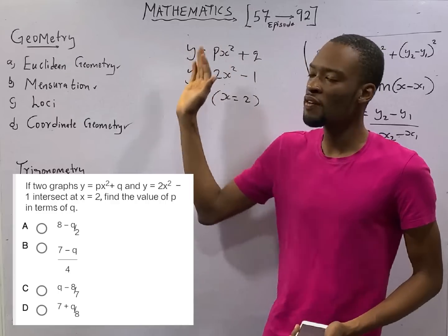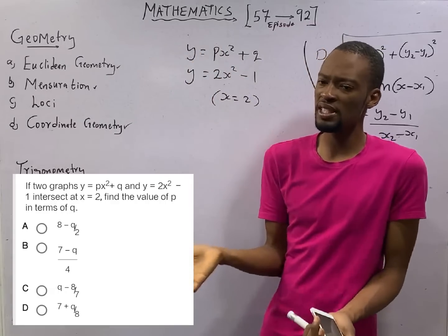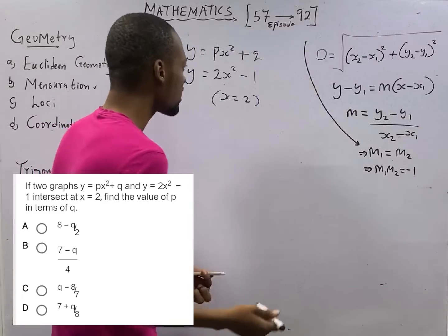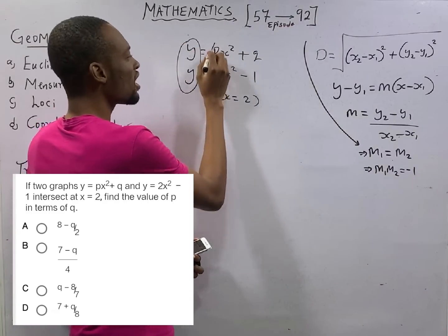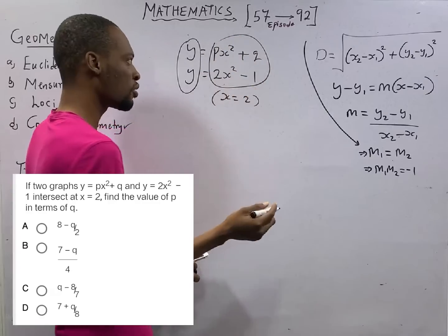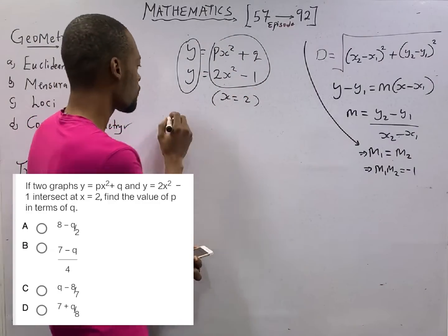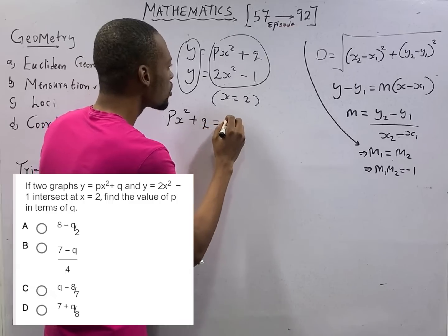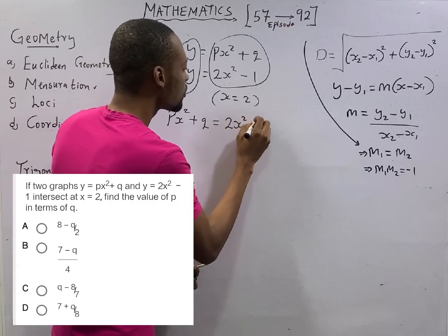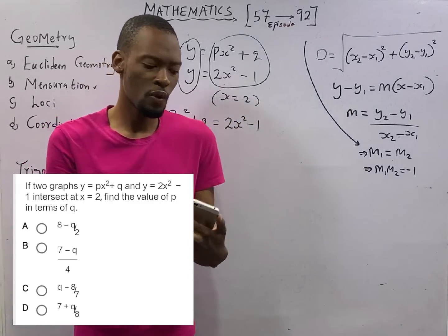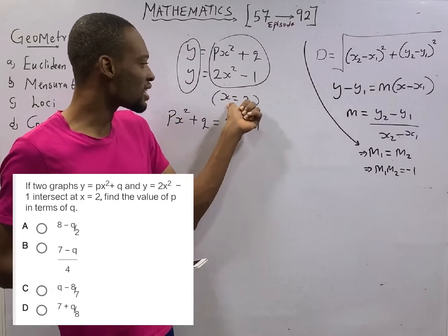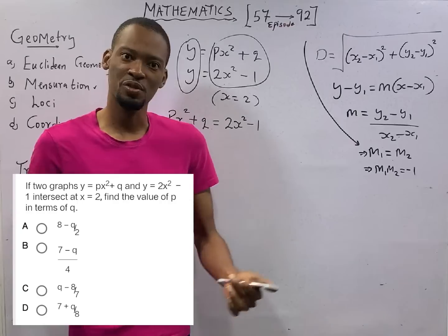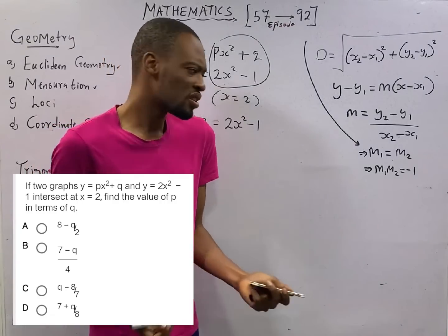So if you make y a subject of formula in both of them, and in most cases y is already a subject of formula, for the lines to intersect, it means y equals y and everything here equals each other. Giving us px squared plus q to be equals 2x squared minus 1. And we are told that they intersected at x equals minus 2.